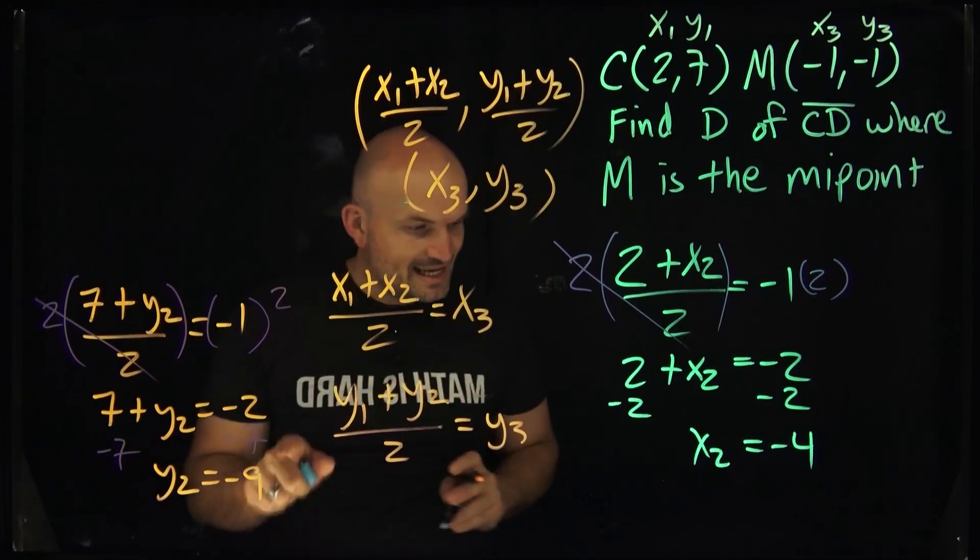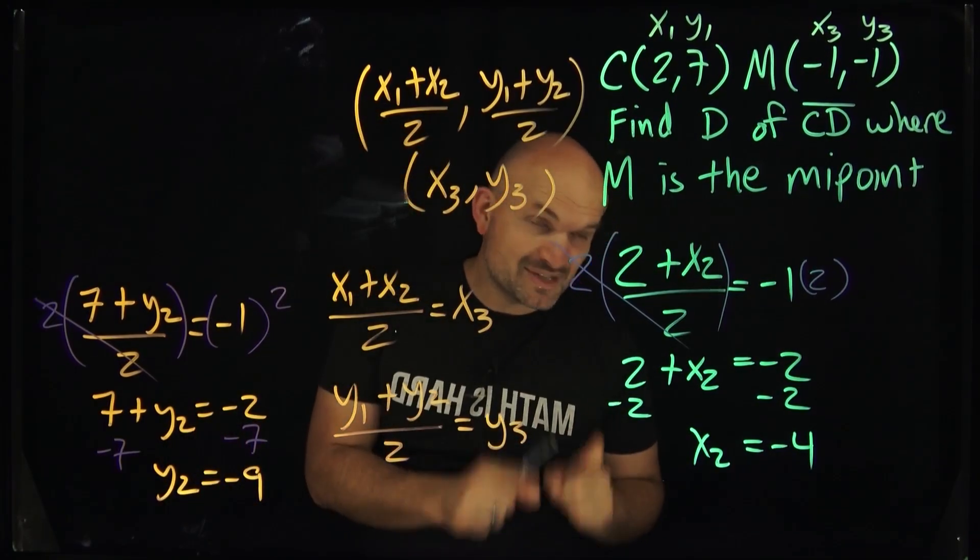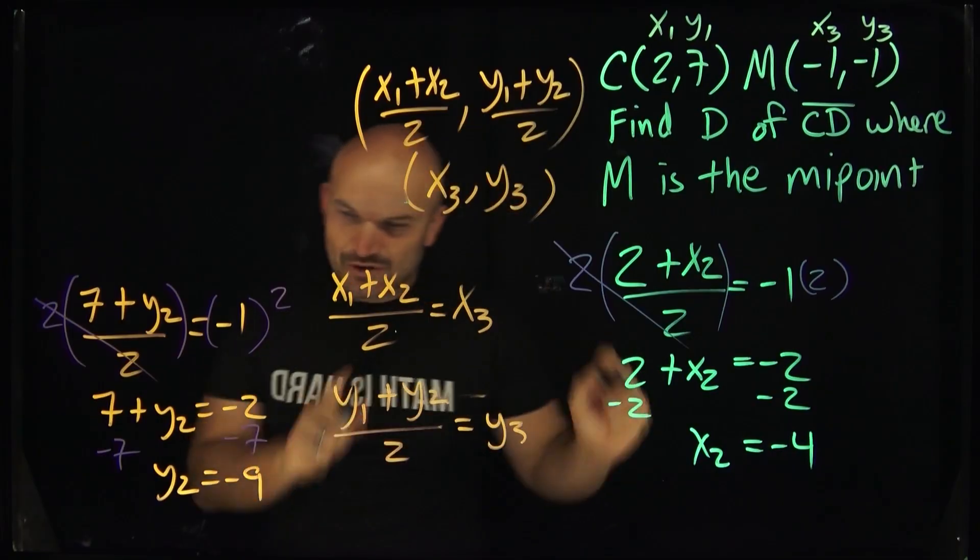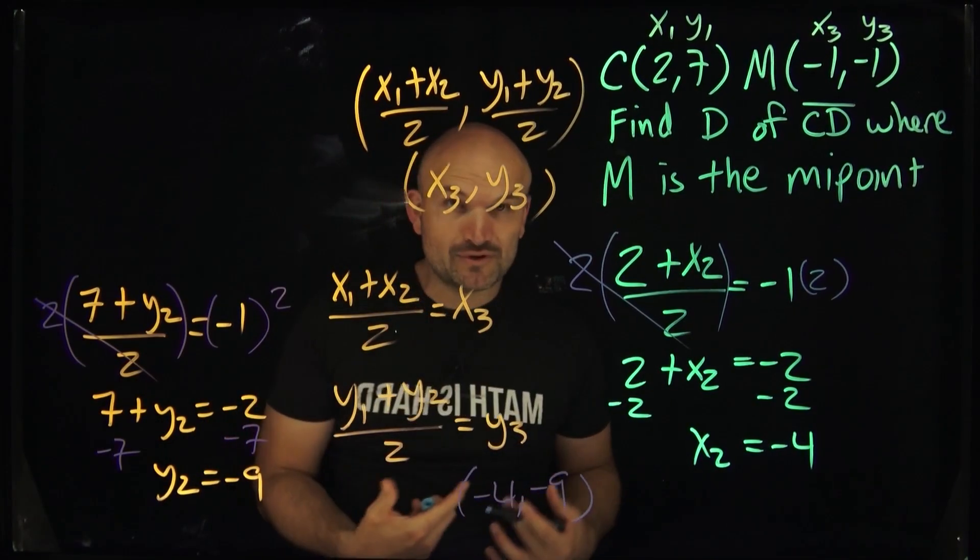So therefore, the other endpoint is now going to be a negative 4, negative 9, which, if you remember, was supposed to be in the third quadrant. Is this coordinate point negative 4 comma negative 9? Is that going to be in the fourth quadrant? Yes, it is.